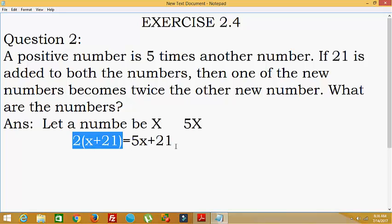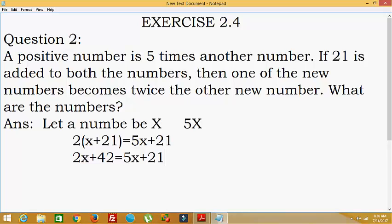Now we will solve for the value of x. That is 2(x plus 21), so 2x plus 42, which is equal to 5x plus 21.